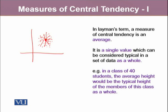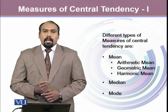Such type of values help us to measure where the exact center is. These measures of central tendency are also known as measures of location. In another example, in a class of 40 students, the average height would be the typical height of the members of this class as a whole.